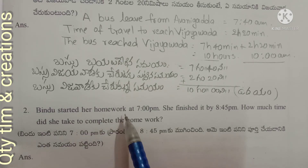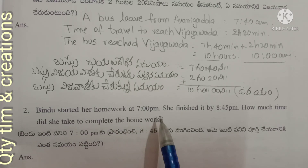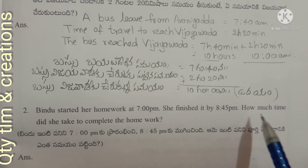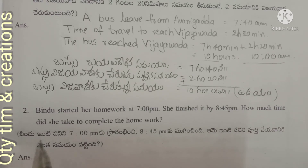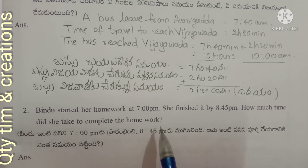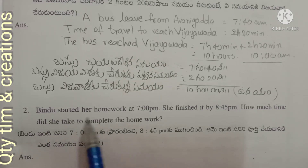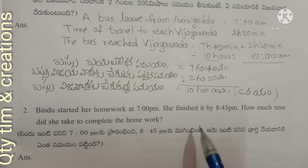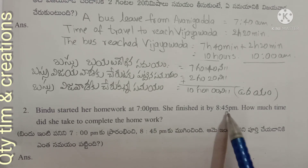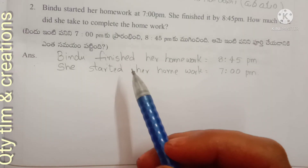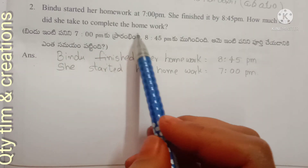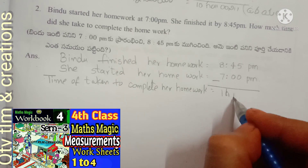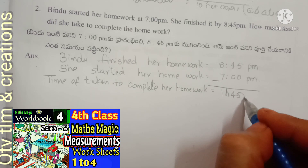Next question: Bindu started her homework at 7 PM and finished it by 8:45 PM. How much time did she take to complete the homework? Bindu starts at 7 PM and finishes at 8:45 PM. Time taken to complete her homework equals 1 hour 45 minutes.